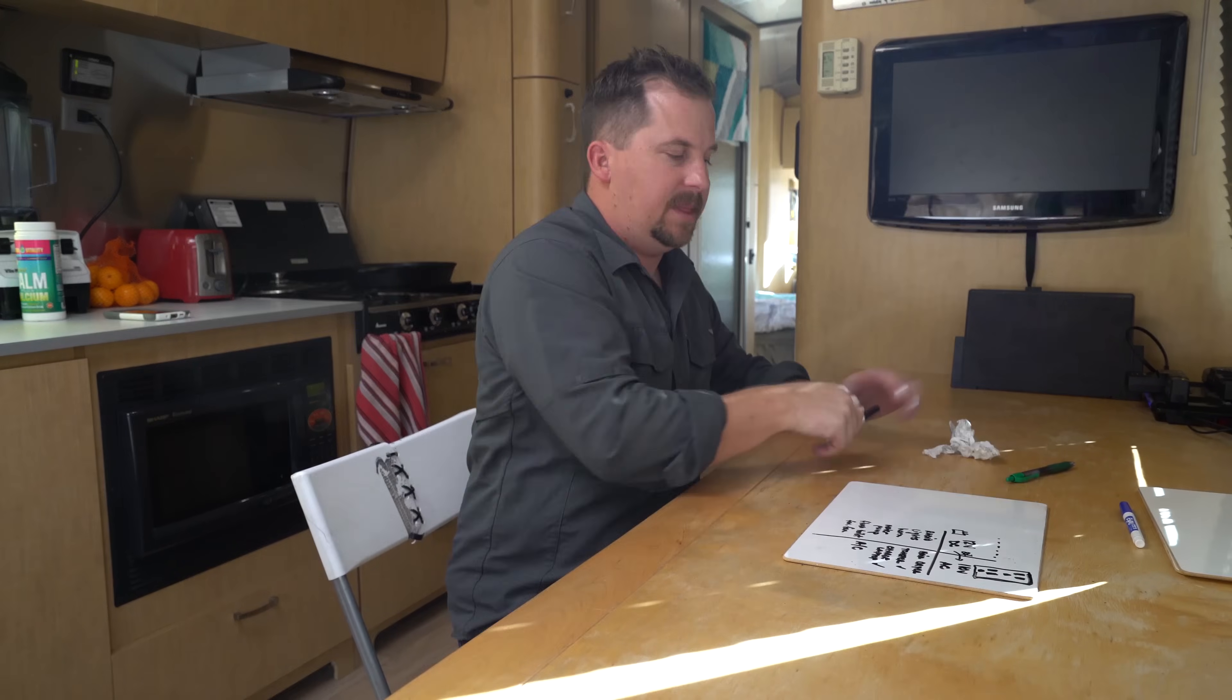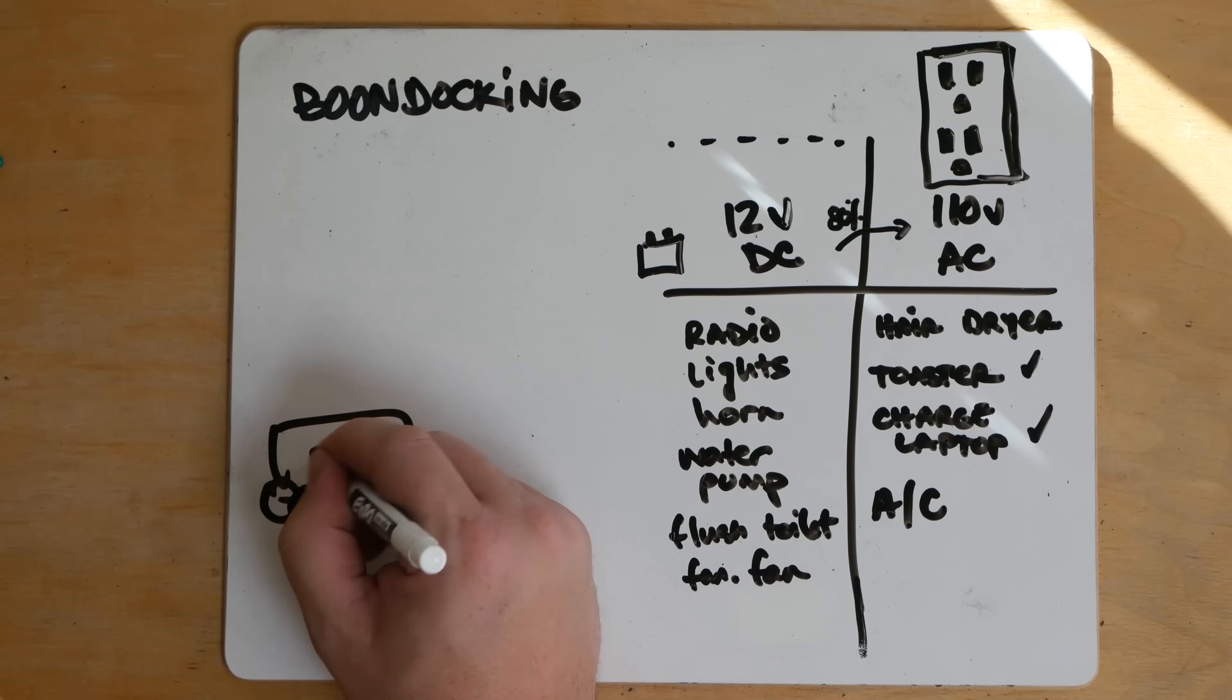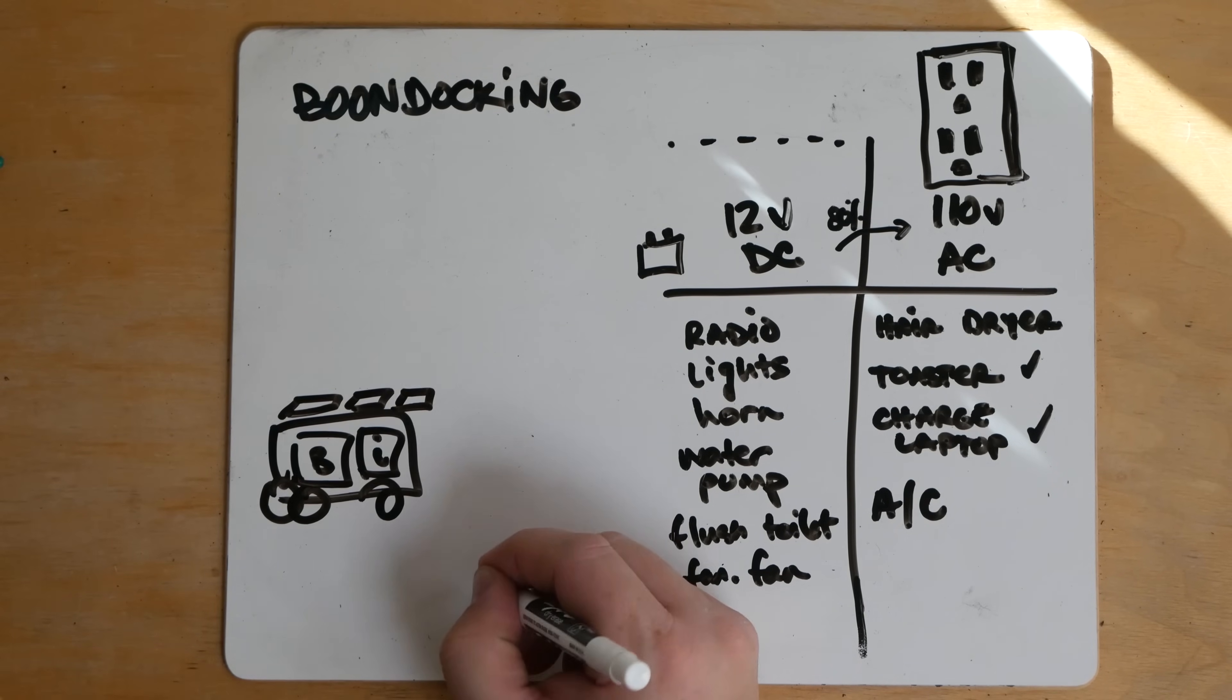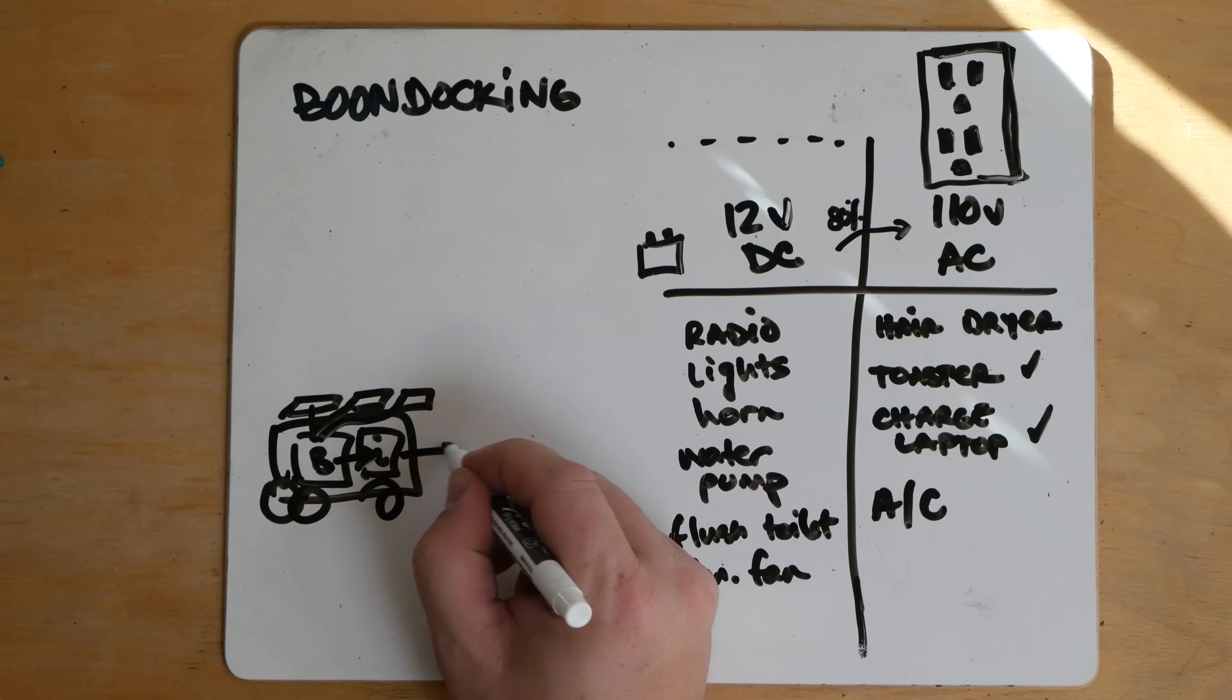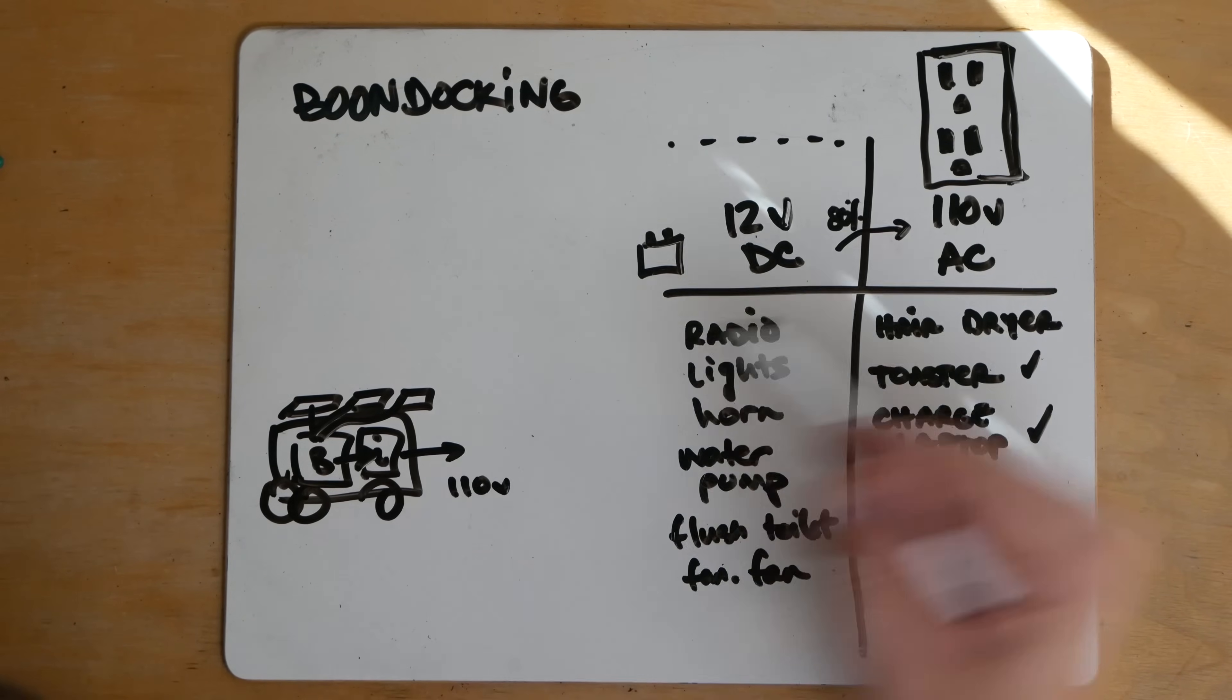One more example. Now we're back to boondocking. We've got our battery. We've got our inverter. And now we have solar. So we don't need a generator anymore because our solar is feeding our battery. Our inverter is taking the battery juice and turning it into 110 volt. So now, as long as we don't exhaust our battery and our inverter is big enough, we can use all these systems and all these systems and the solar will keep on charging that battery throughout the day.